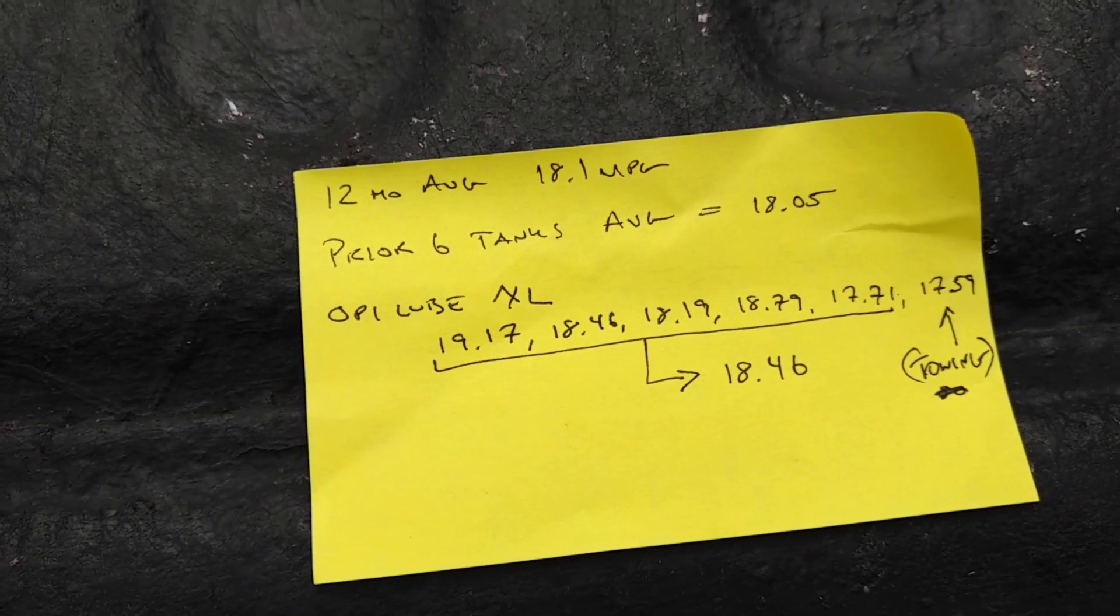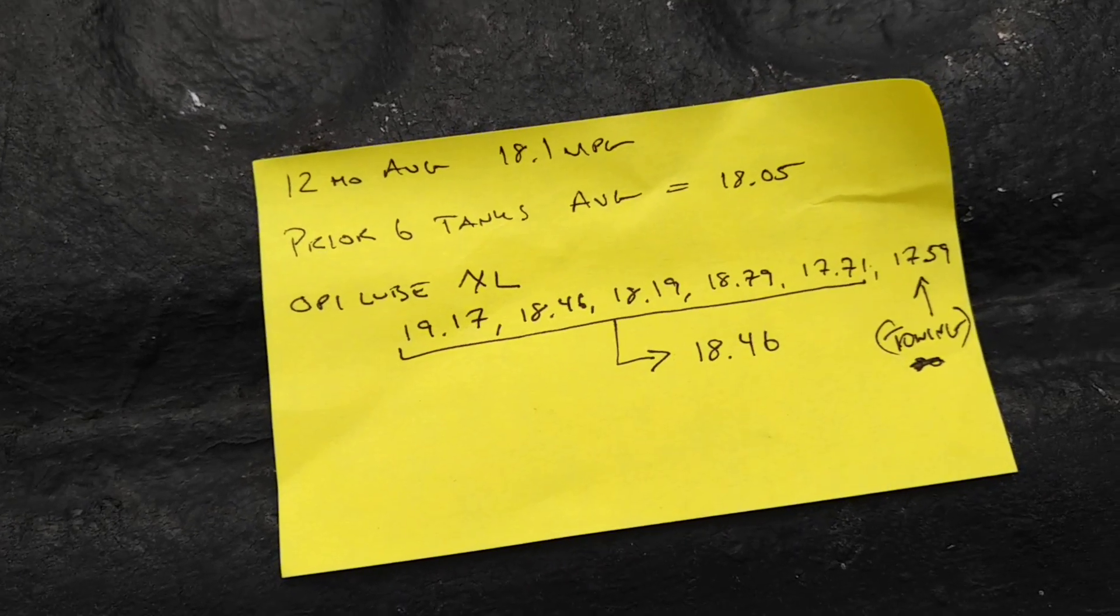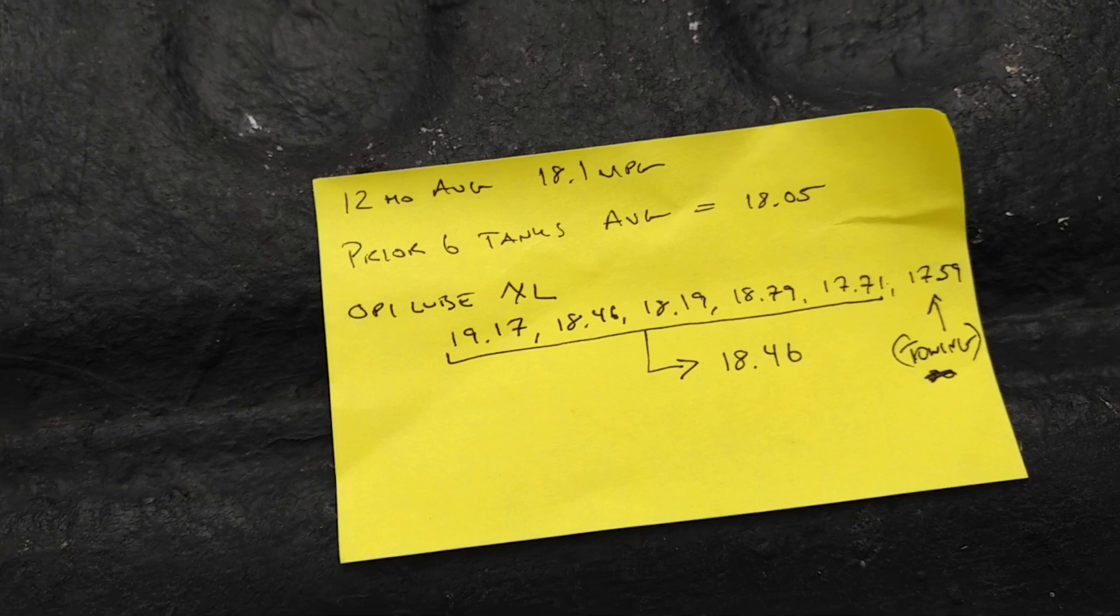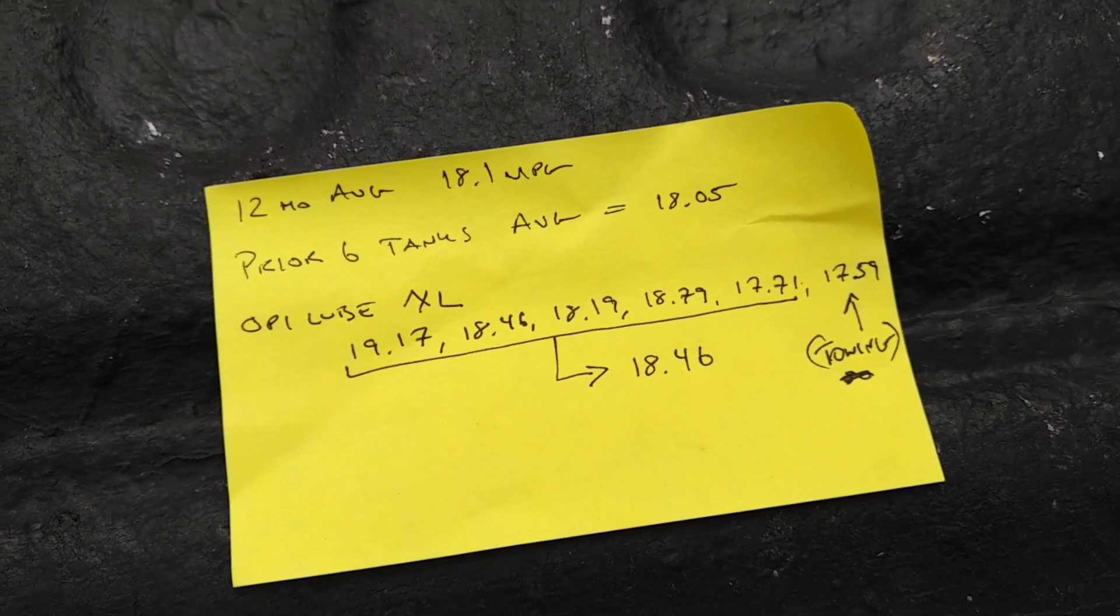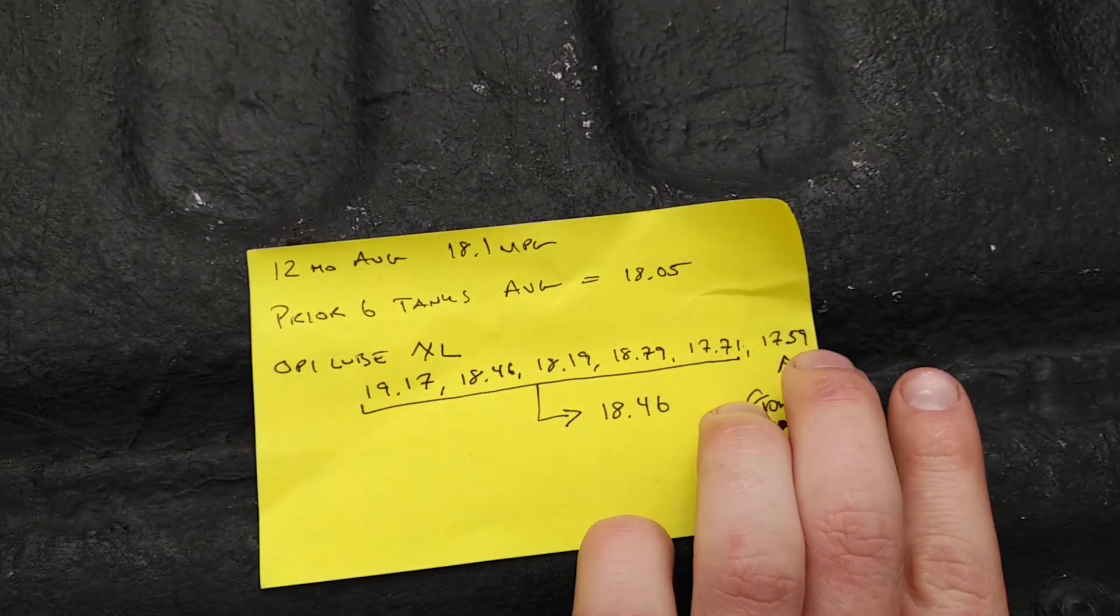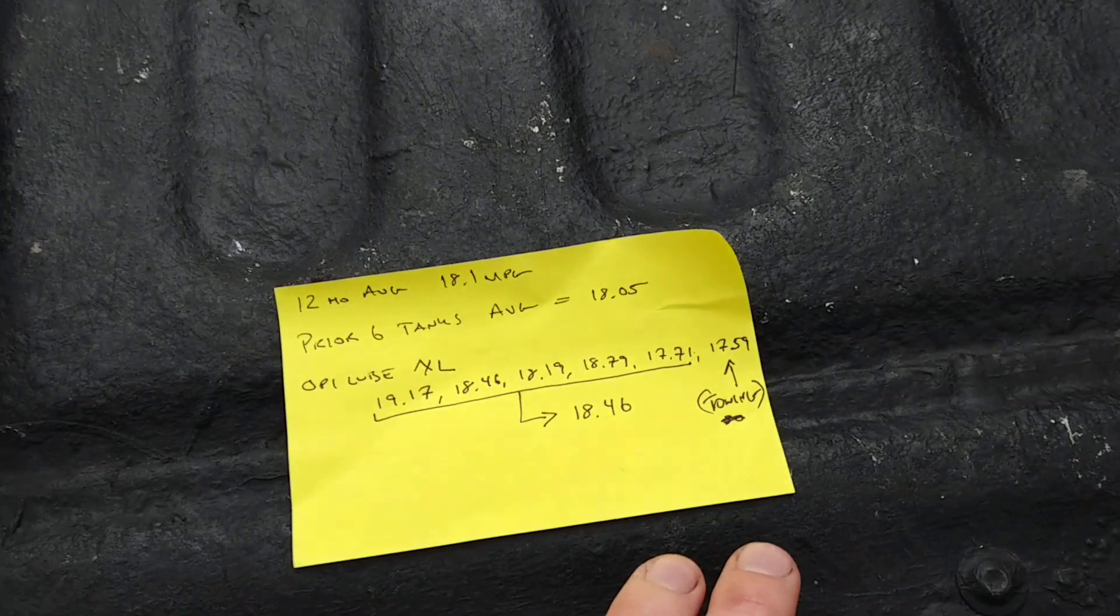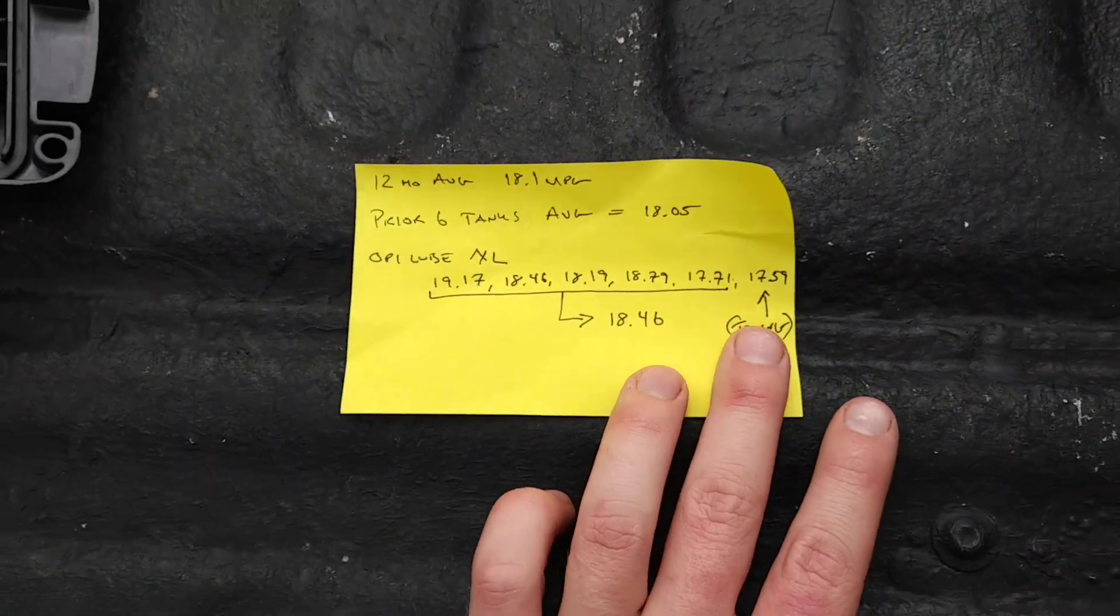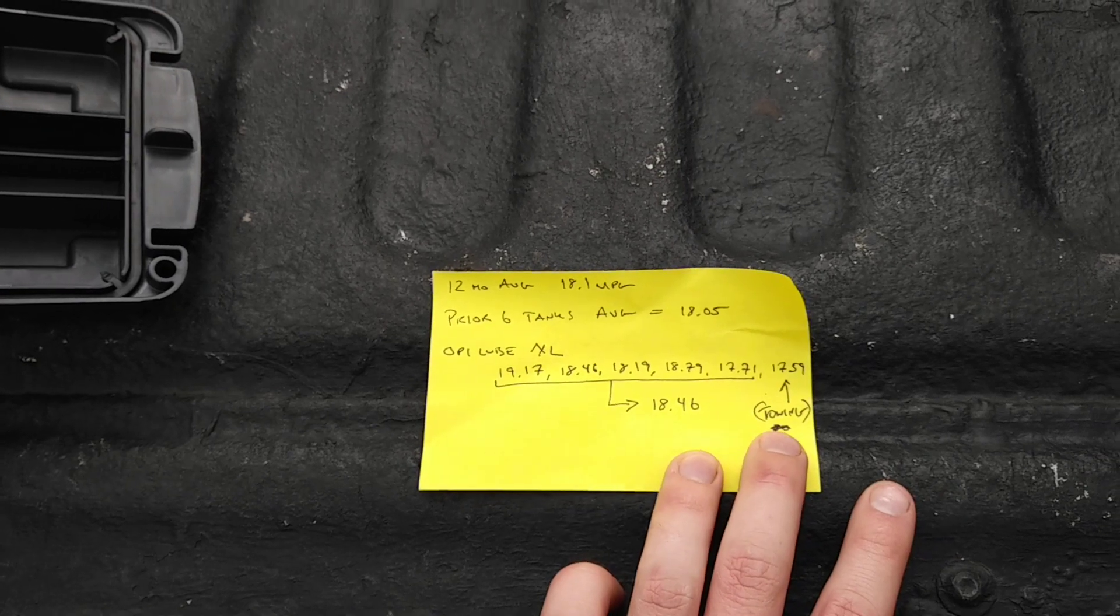These tanks that we use the Optilube XL, also mostly in February, just a couple tanks there at the tail end in March. There's our tanks and you can see 18.46 is the average of these five. I excluded this one because I was pulling the gooseneck back here. I was pulling the gooseneck in that and it brought down, unfairly brought down that one, so I threw that one out of the test.